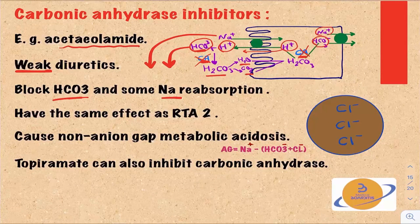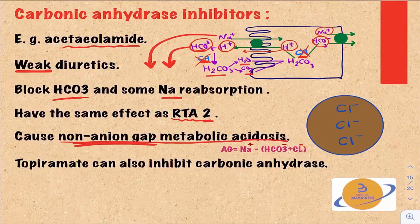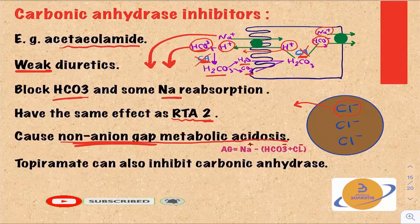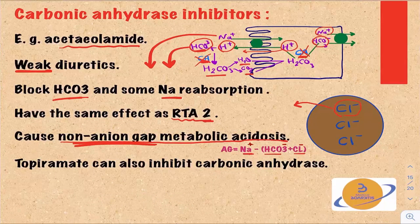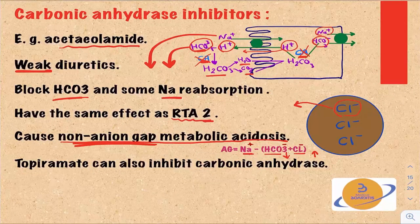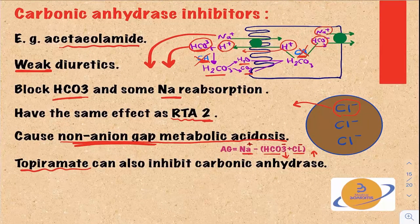This mechanism of action is similar to the pathophysiology of renal tubular acidosis type 2. As with RTA type 2, carbonic anhydrase inhibitors cause non-anion gap metabolic acidosis: the loss of bicarbonate in the urine is compensated by chloride moving from the intracellular to the extracellular compartment. Since the anion gap equals sodium minus the sum of bicarbonate and chloride, when bicarbonate goes down and chloride compensates by going up, the anion gap remains unchanged. On a side note, topiramate is an anti-epileptic medication that also inhibits carbonic anhydrase and causes the same effect.